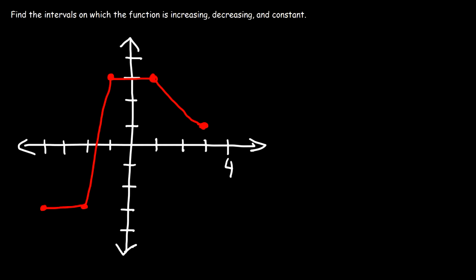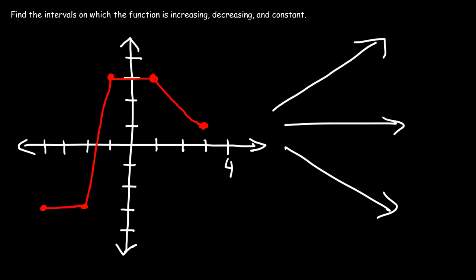In this video we're going to focus on increasing and decreasing functions. A function is increasing when the graph is going up as you move from left to right. It's constant when it's just maintaining the same y value — if it's horizontal. And it's decreasing if it's going down as you move from left to right.